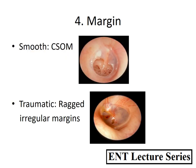The fourth characteristic is the margin. In CSOM, the perforation generally has a smooth margin, as can be seen in this figure. However, if the perforation is due to trauma, the margins will be ragged or irregular, as seen in this endoscopic picture.